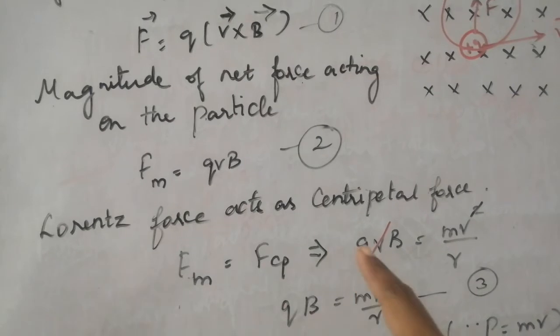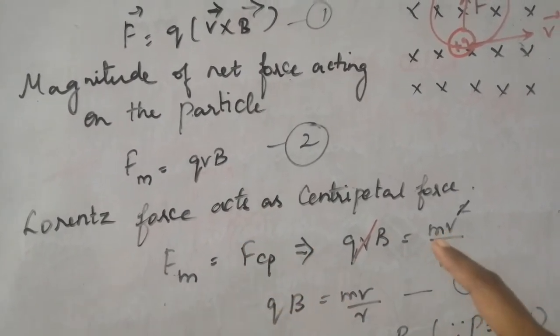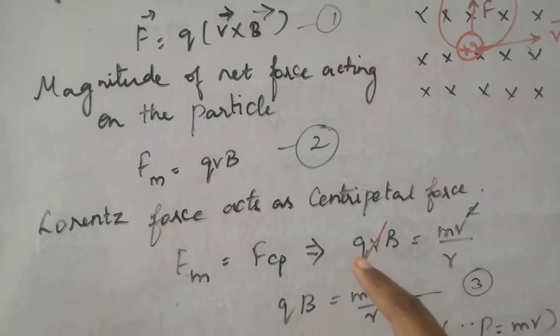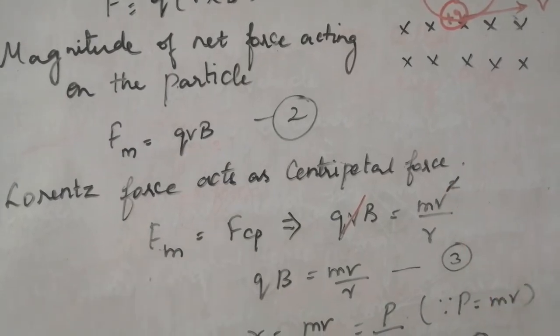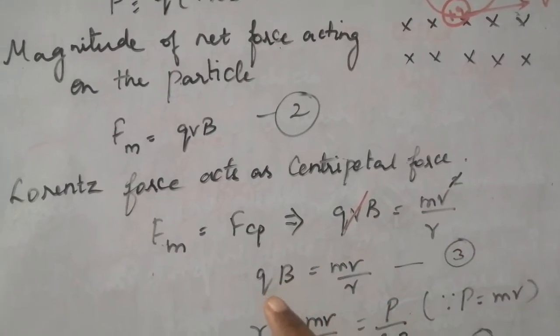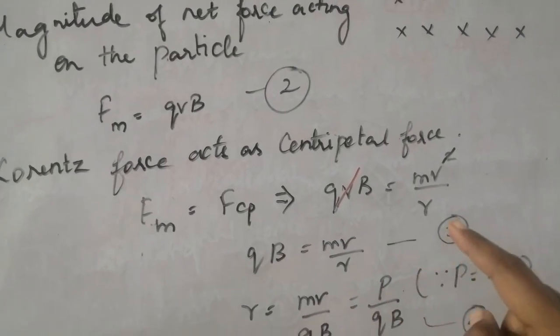So what is the value for Fm? It is QVB. Fcp is centripetal force. Centripetal force value is MV square by R. So QVB equal to MV square by R. Here one V and V will get cancelled off. Then you have the equation as QB equal to MV by R. Let this be equation number 3.